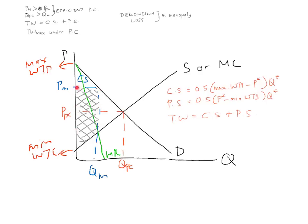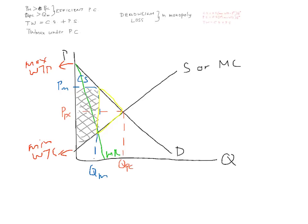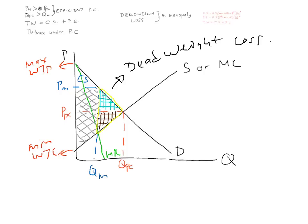While the producer has managed to take some surplus from the consumer, the producer has also lost some. This entire area is what we call dead weight loss. The consumer will have lost part of this area to dead weight loss, and the producer will have lost part of this area to dead weight loss as well.